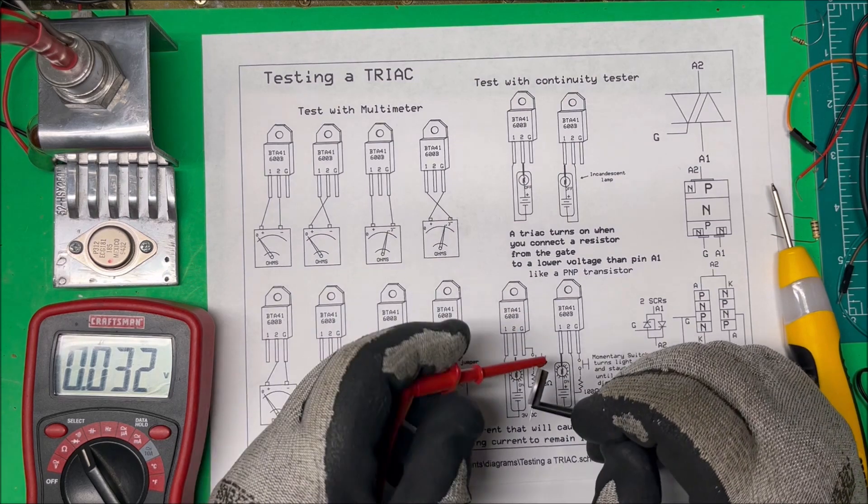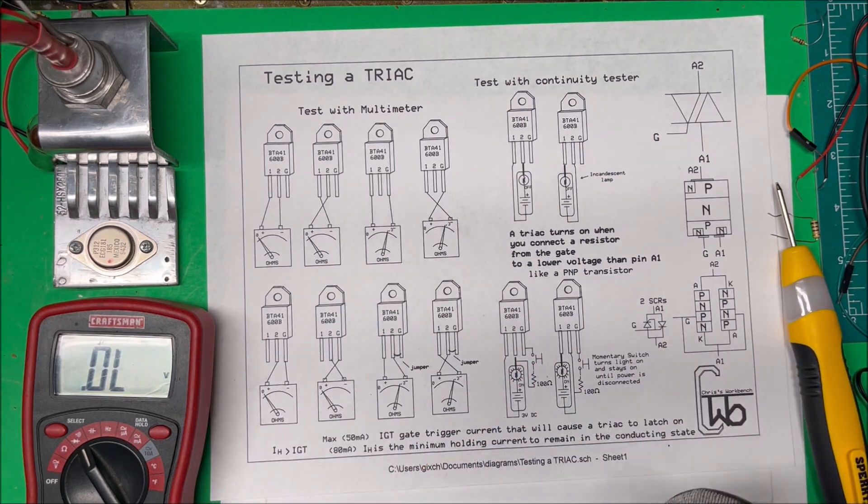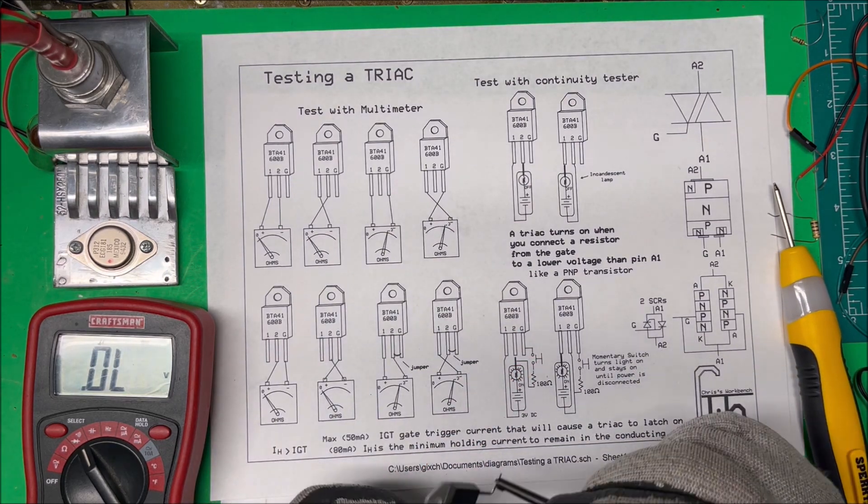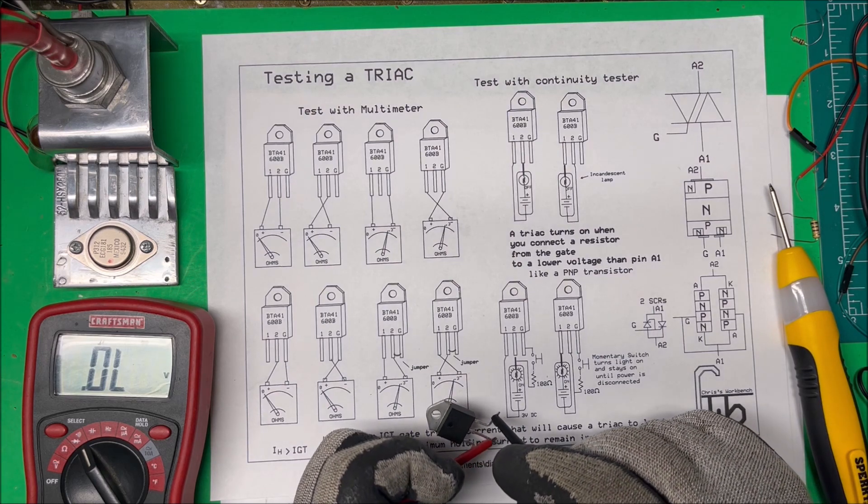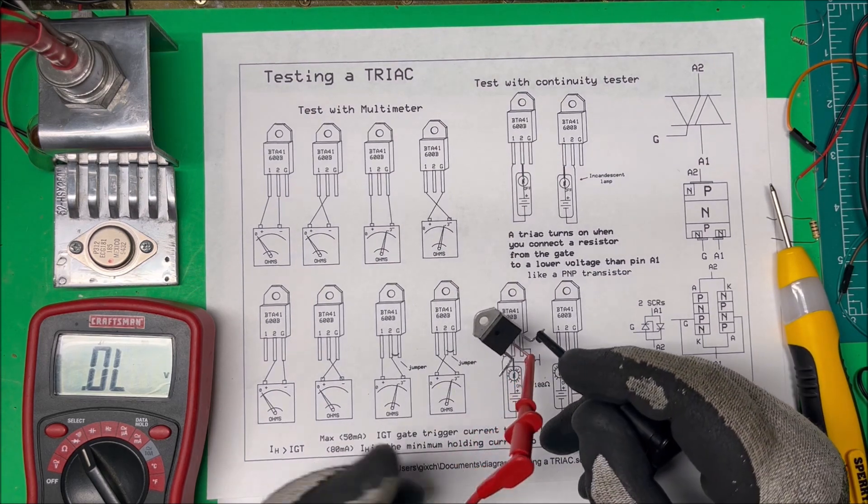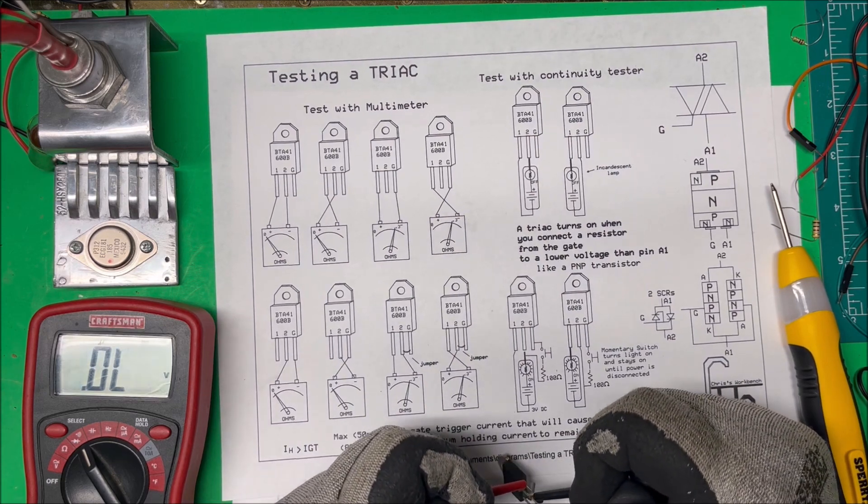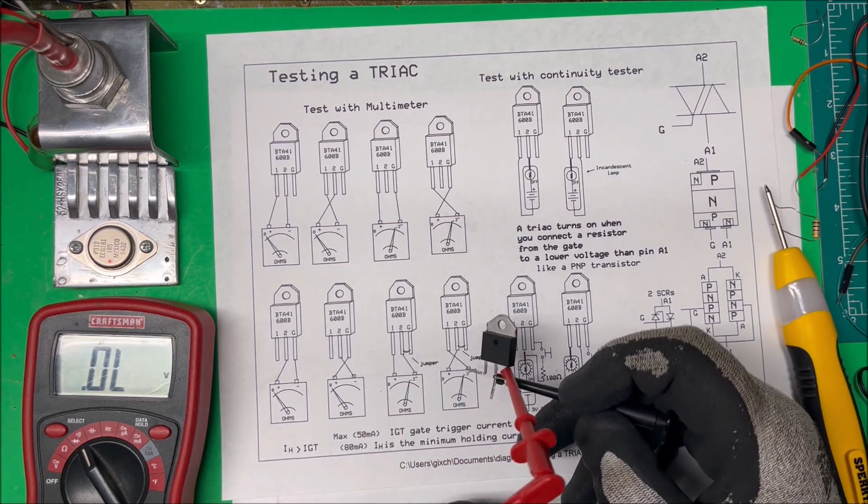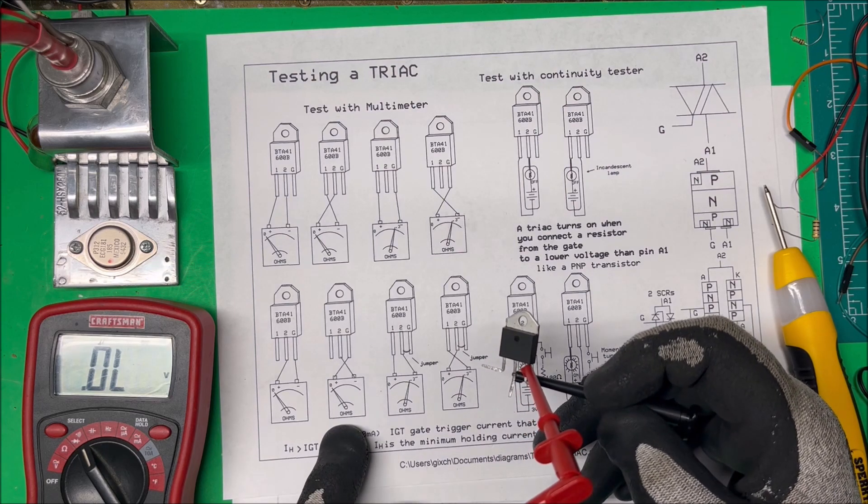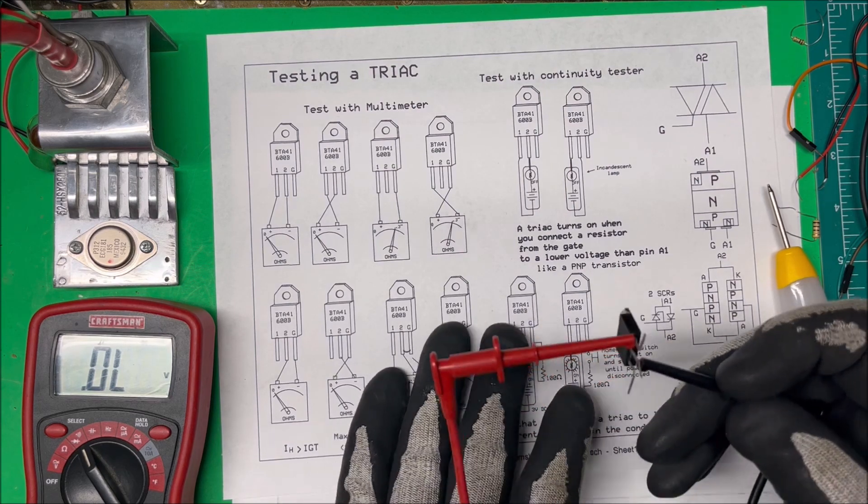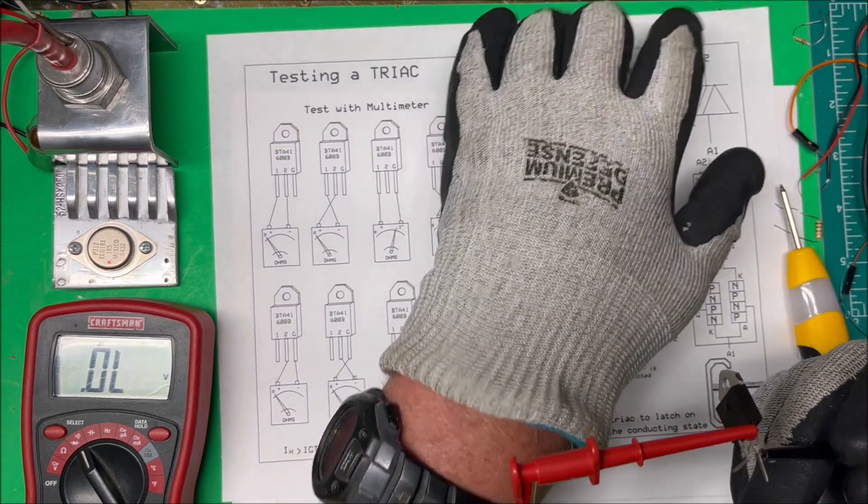And then let's go from the gate to pin 2. There we should get nothing, which we do. And then we reverse that, change the polarity there, and we get nothing on this one here. I'm going to leave a link to this diagram in the description.